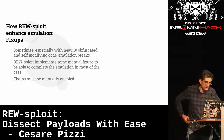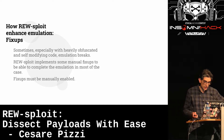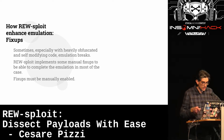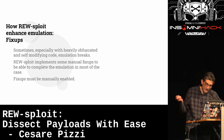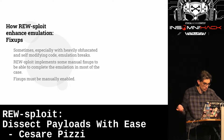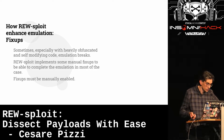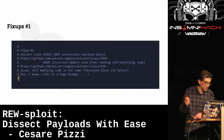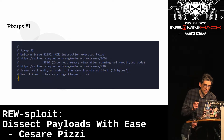RE-sploit enhances emulation because sometimes Unicorn Engine and Mandiant SpeakEasy break when you try to emulate certain payloads. I had to face several issues, and this is handled through fix-ups. Fix-ups must be manually enabled with the '-f' option. Let me give you an example: I realized this when working with Shikata Ga Nai encoded samples from Metasploit.